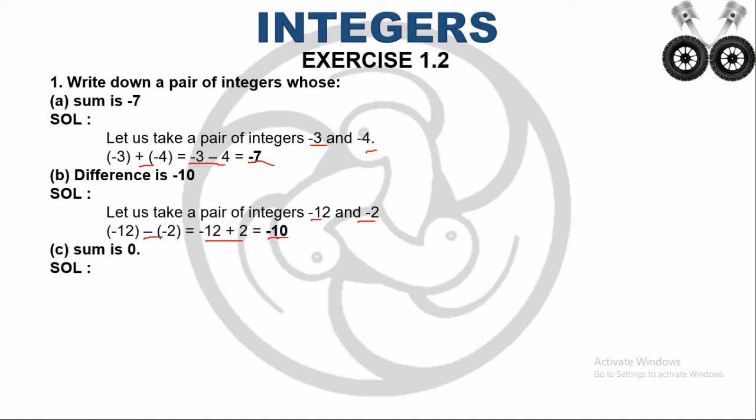Sub-question C: sum is 0. Whenever I add 2 integers, the answer should be 0. I take the 2 integers as -3 and 3. Minus 3 plus 3 equals 0.